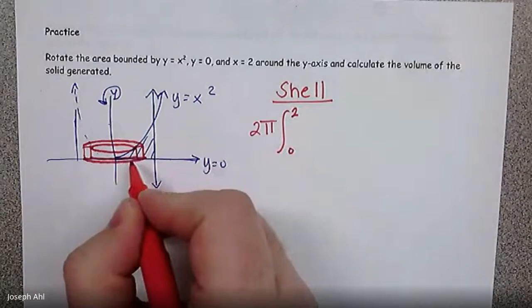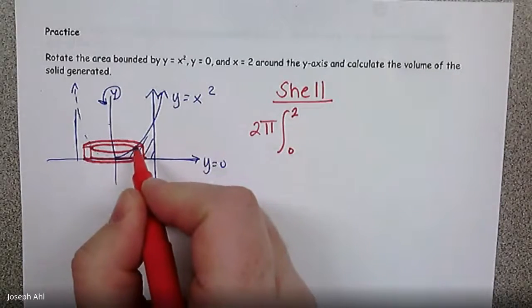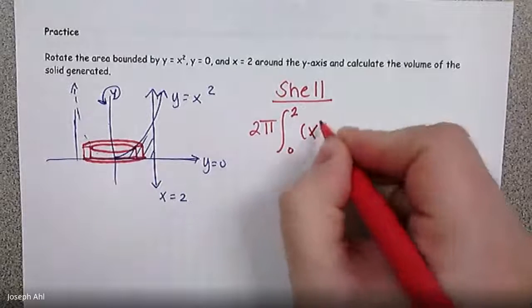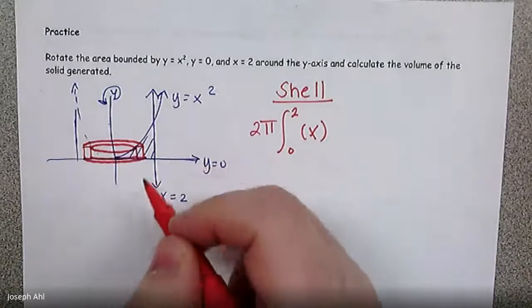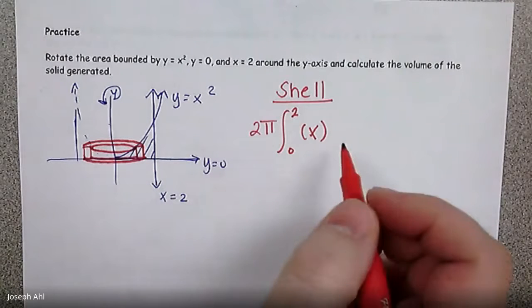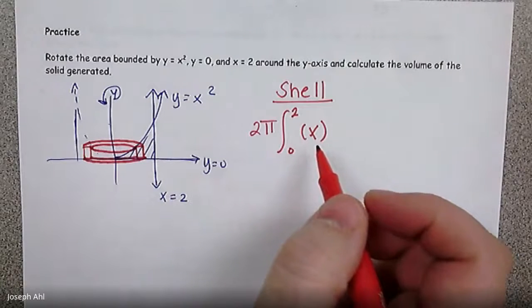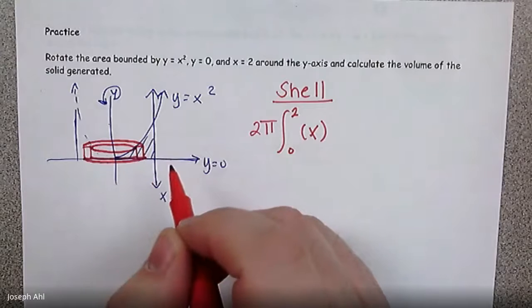The radius at any given point of our cylindrical shells is just going to be x. And that's very common that when you're dealing with the shell method, the radius is either x or it could be y if you're spinning it around the x axis.